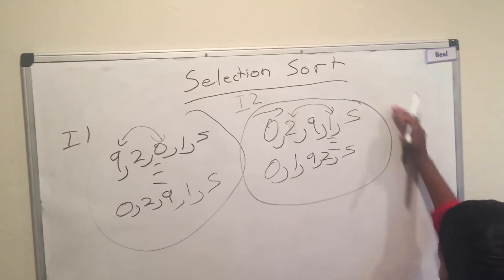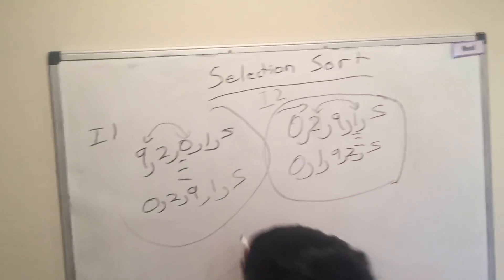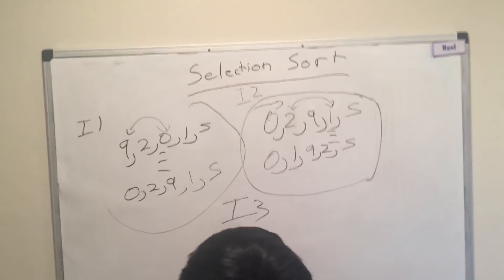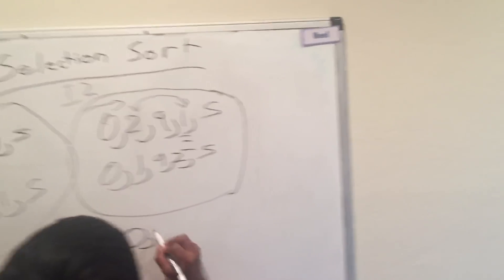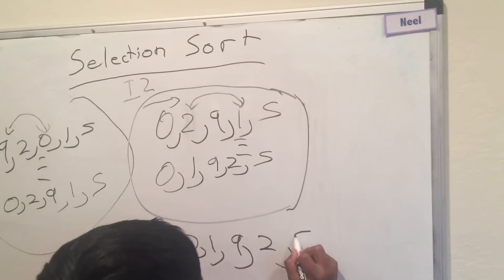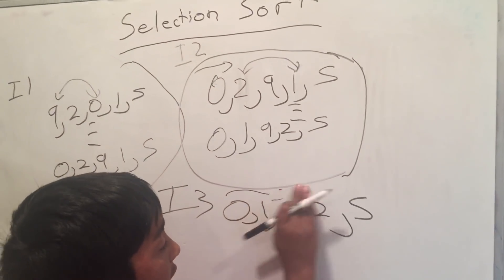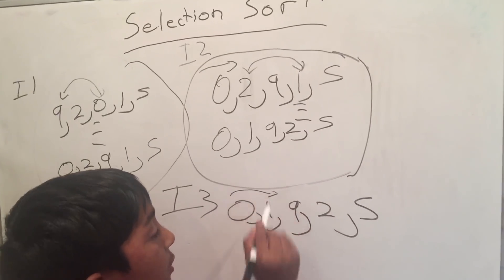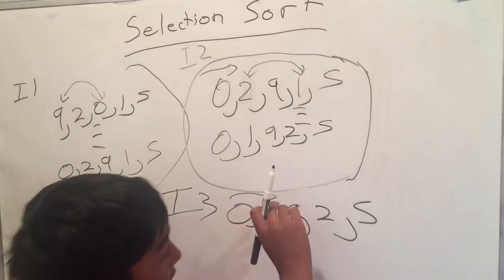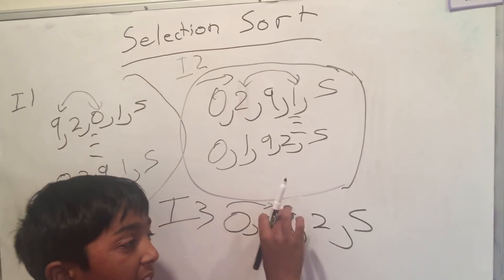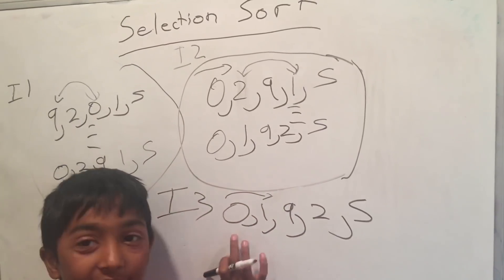Now, moving on to iteration 3. In iteration 3, right here, you can see that the sorting part of the list is up to index 1. So, whatever you put, it's going to go here.